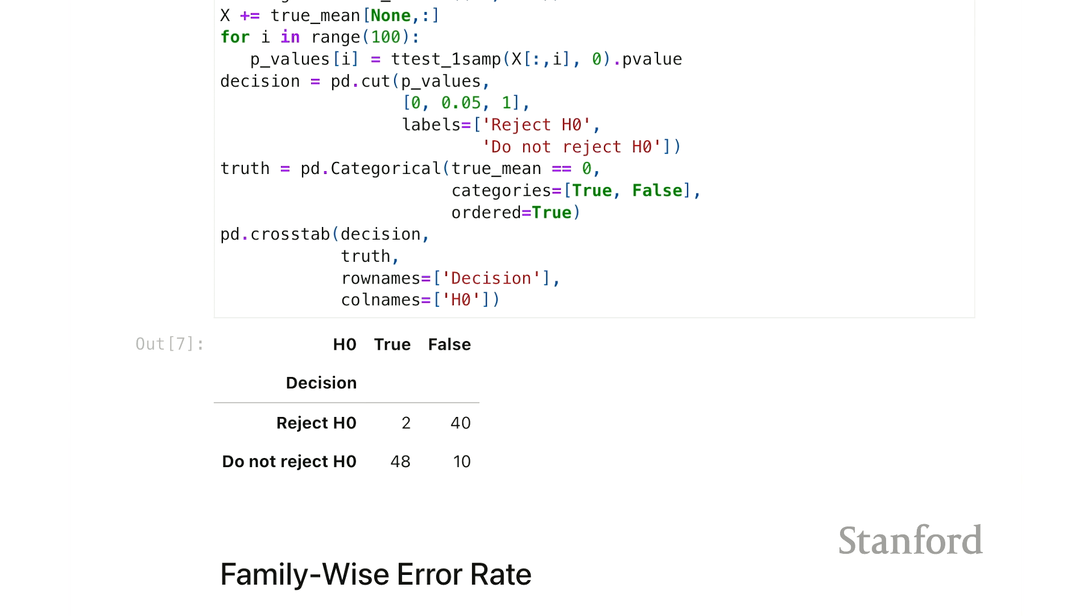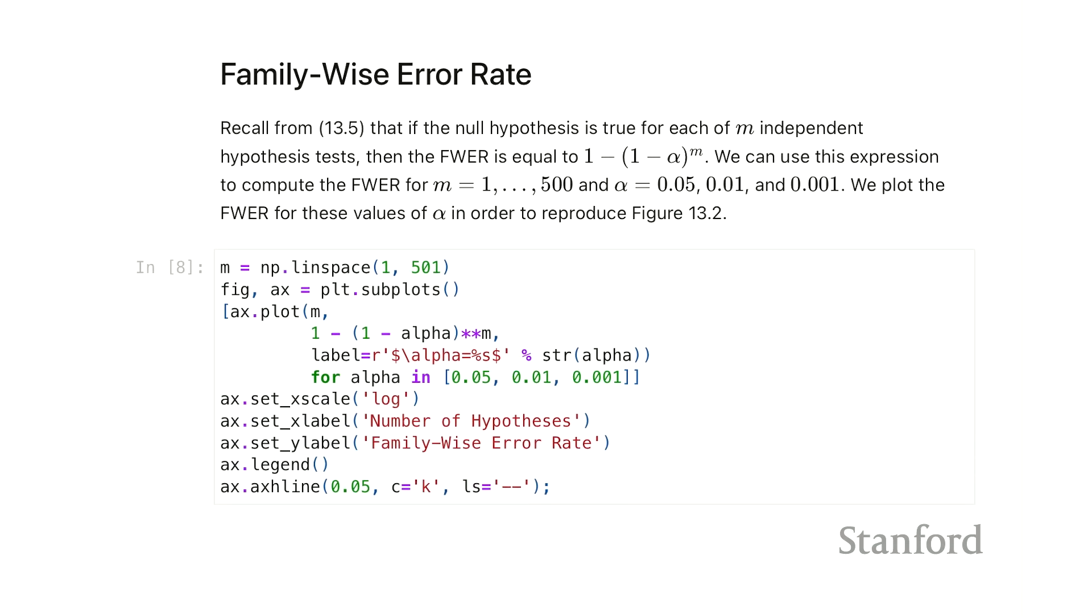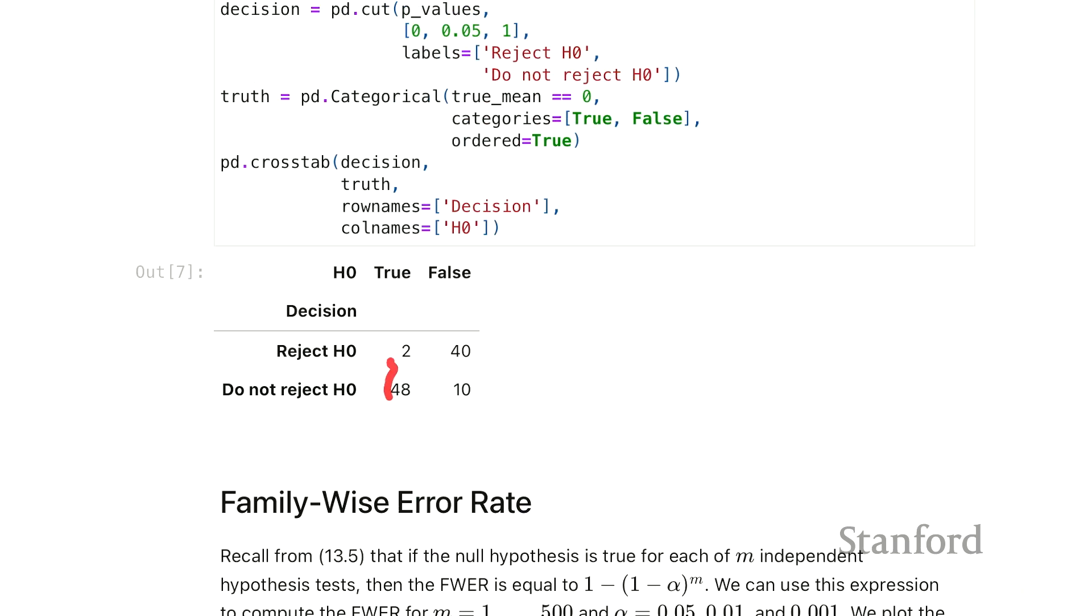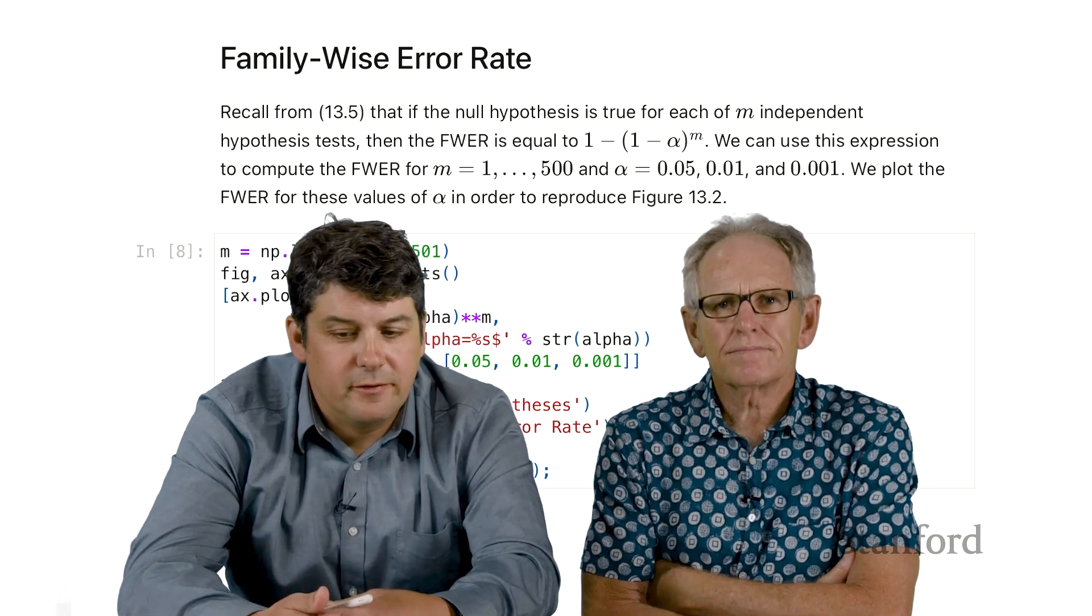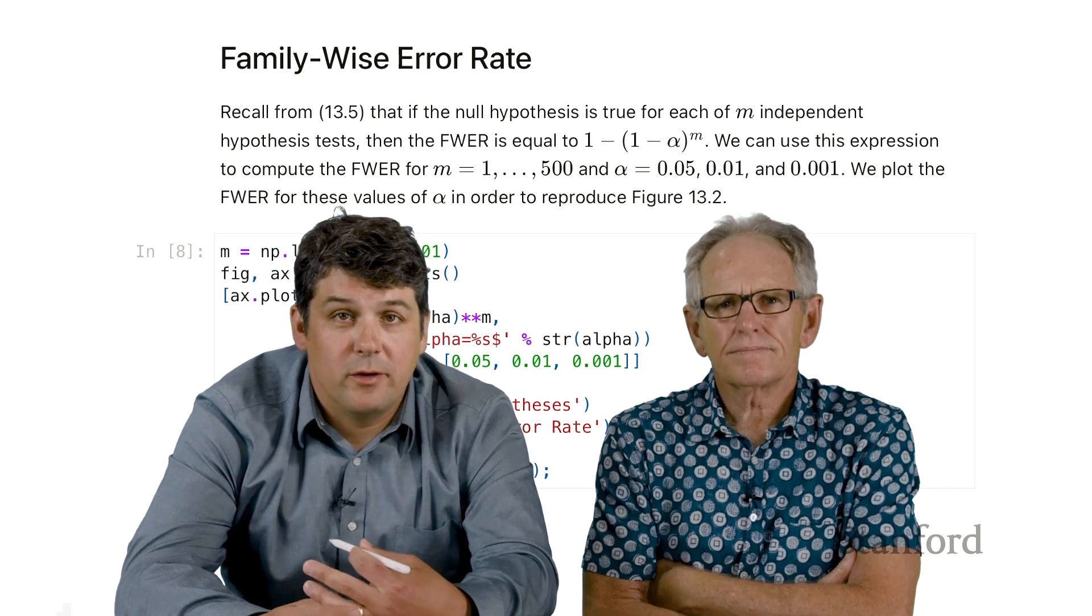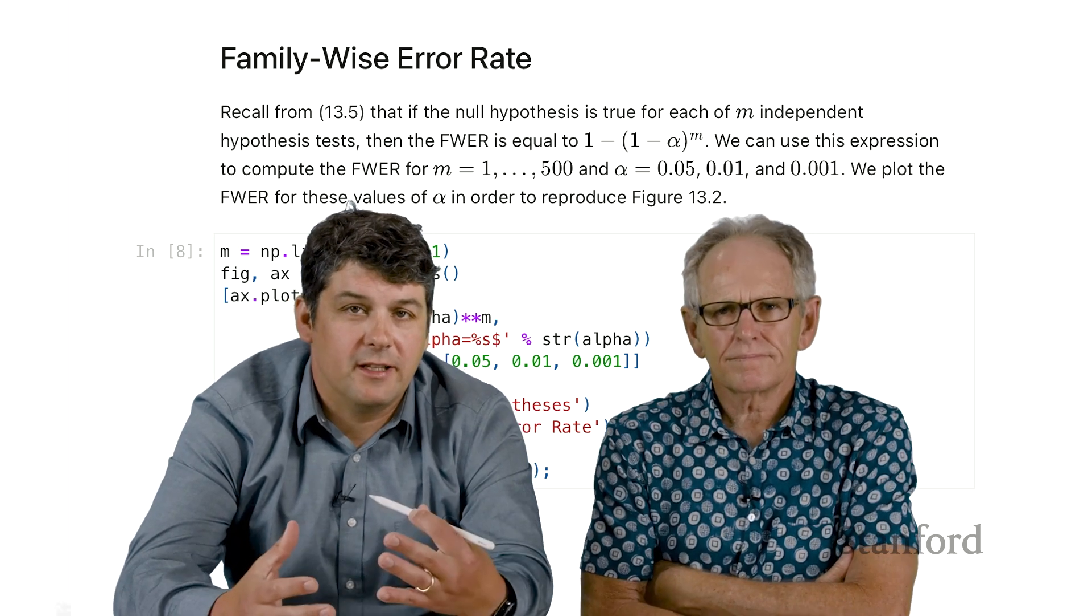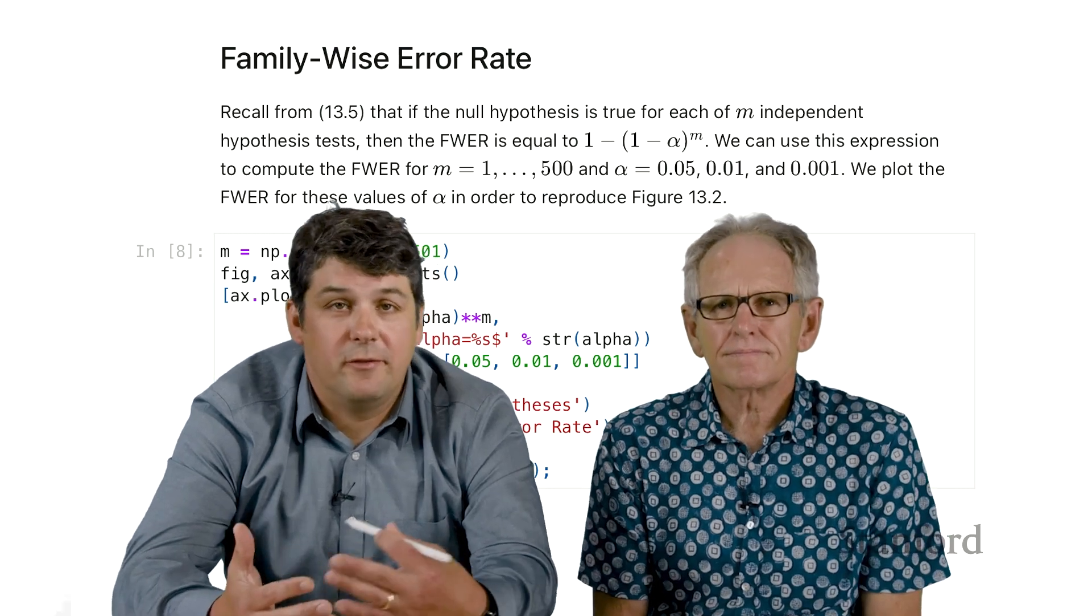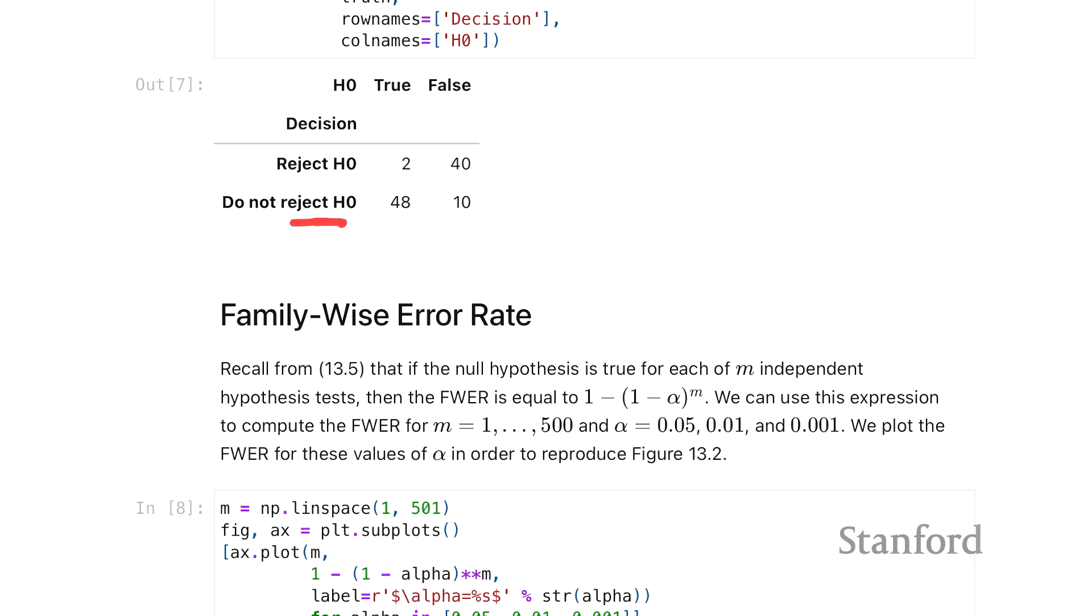When we have multiple p-values, we're going to make some false positives. So the field of multiple comparisons, what it is based on is trying to make decision rules and each decision rule makes one of those tables to satisfy certain properties.